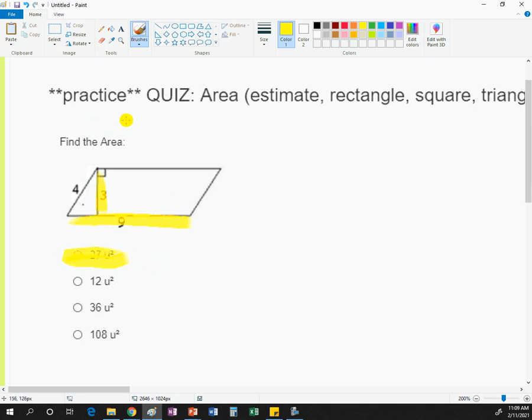For some people's answers, and this was not on everybody's version of the practice quiz, but it had 36 marked as the correct answer, and that's not the case.